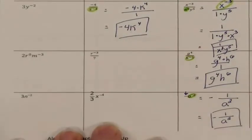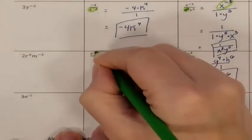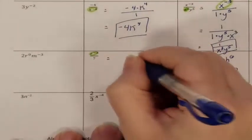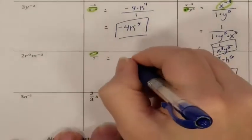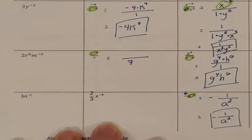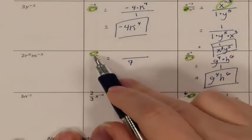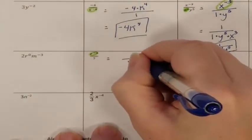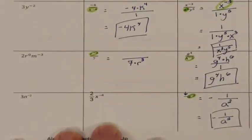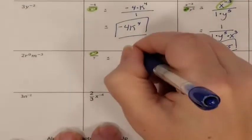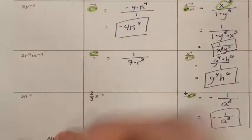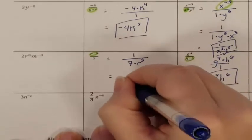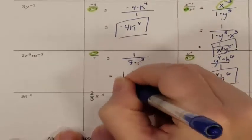Next problem. R is the only thing that has the negative exponent, so R is the only thing that moves. The 7 stays exactly where it was in the denominator. The R was in the numerator and needs to move to the denominator — when it moves, it turns to a positive exponent. The numerator is not allowed to be empty, so it's a 1. The final answer is 1 all over 7R to the 3rd power.